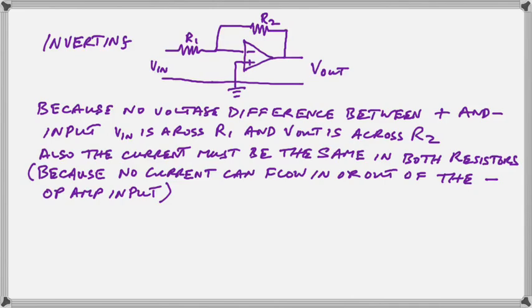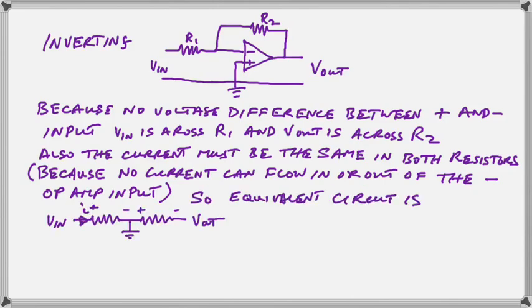Now, the current in both R1 and R2, regardless of their value, is also going to be the same current. Because no current can flow in or out of the op-amp negative input. Therefore, all the current flowing through R1 is going to go right up and flow through R2. So that makes the equivalent circuit as shown there. We've included the ground connection directly between the two resistors, R1 and R2.